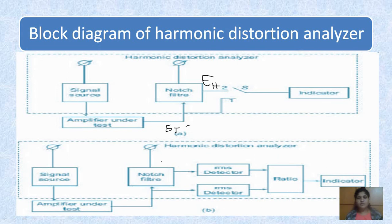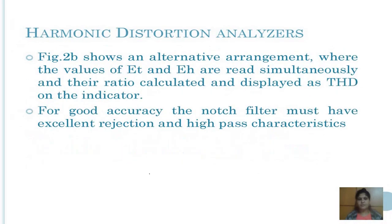The notch filter removes the fundamental component from the signal, giving good accuracy and excellent rejection, and it has bandpass characteristics. It should attenuate the fundamental by 100 dB or more, and attenuate harmonics by less than 1 dB. The filter also needs to be accurately tuned to the fundamental of the signal source. In the second figure, ET and EH are read simultaneously, their ratio is calculated, and the result is displayed as total harmonic distortion on the indicator.